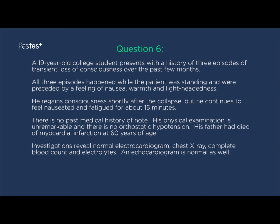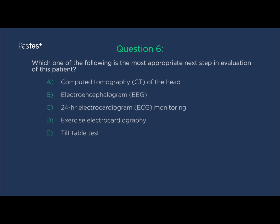We now do the final question, question six. A 19-year-old college student presents with a history of three episodes of transient loss of consciousness over the past two months. All three episodes happened while the patient was standing and were preceded by a feeling of nausea, warmth, and lightheadedness. He regains consciousness shortly after the collapse but continues to feel nauseated and fatigued for about 15 minutes. There is no past medical history of note, physical examination is unremarkable, and there's no evidence of orthostatic hypotension. Investigations reveal a normal ECG, chest radiograph, complete blood count, electrolytes, and echocardiogram. If you went for answer E — tilt table test — you'd be correct.